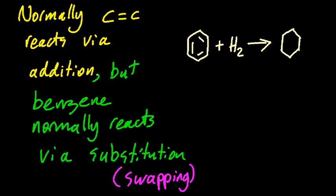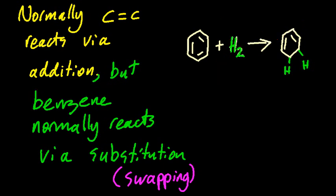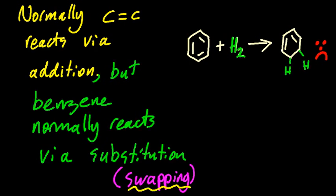But that isn't what happens. That's addition, and benzene doesn't undergo addition. Normally it undergoes substitution. So with the chlorination of benzene, a chlorine is going to swap out for a hydrogen on the benzene ring.